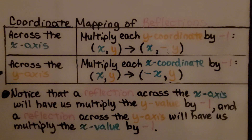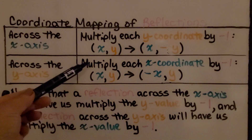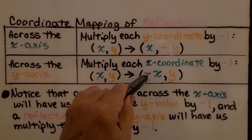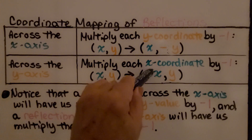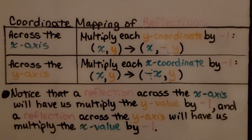If we're reflecting across the y-axis, we're going to multiply each x-coordinate by negative 1. So now we have our y staying the same, but our x-value is multiplied by negative 1. Notice that a reflection across the x-axis will have us multiply the y-value by negative 1, and a reflection across the y-axis will have us multiply the x-value by negative 1.